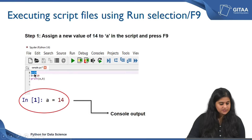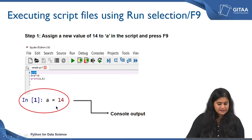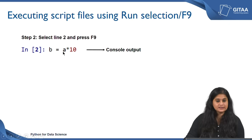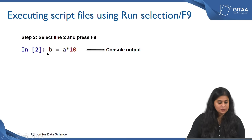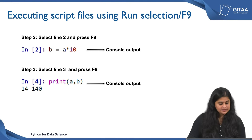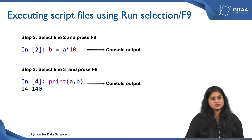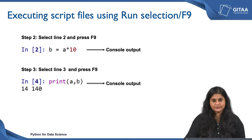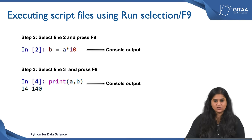Whenever you use the Run Selection command or F9, all these lines of code will be displayed in your console — whatever I have shown you here is the console output. Now run the second line which is b is equal to a into 10 and then press F9. Once you do that you will correspondingly see the code in your console. Then you can run the line which says print of a comma b, and you will see a corresponding output as well. In Run Selection, every time you select a line and run it, the corresponding code is also displayed in the console.